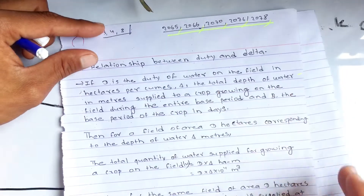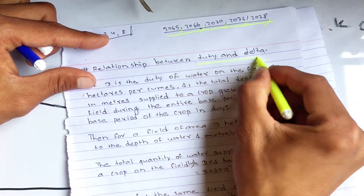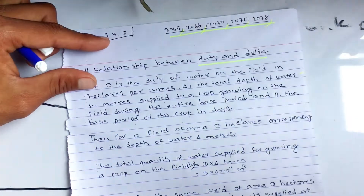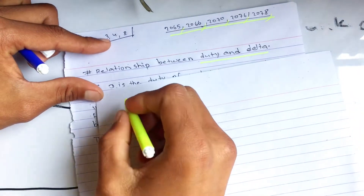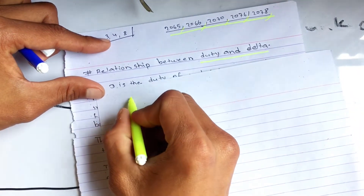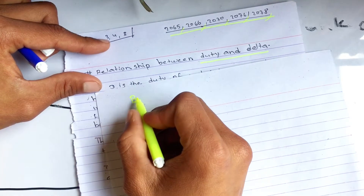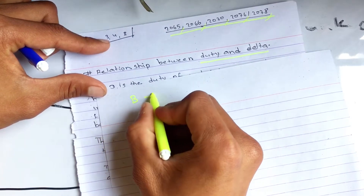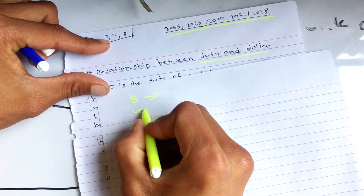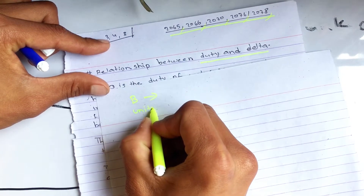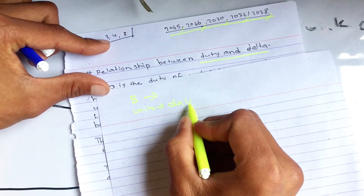We are going to talk about the relation between duty and delta. We will also talk about the base period. We will denote the base period and its unit — the unit for base period is called 'day'.